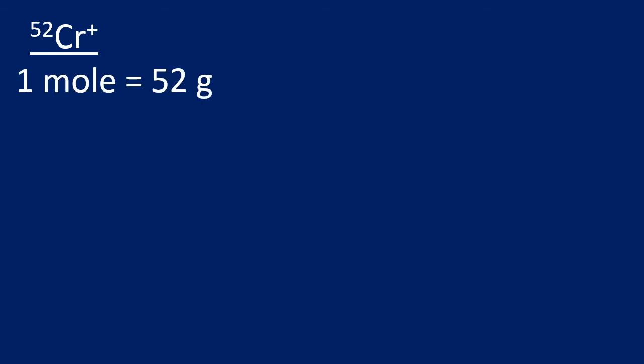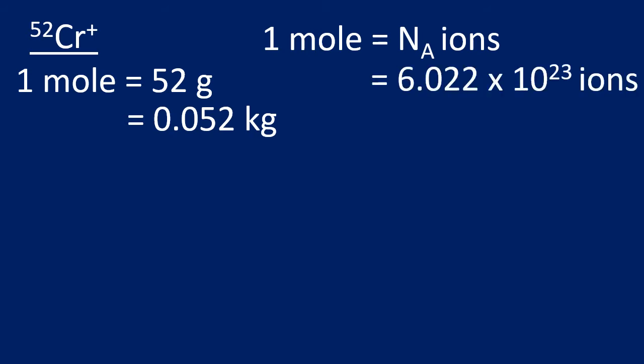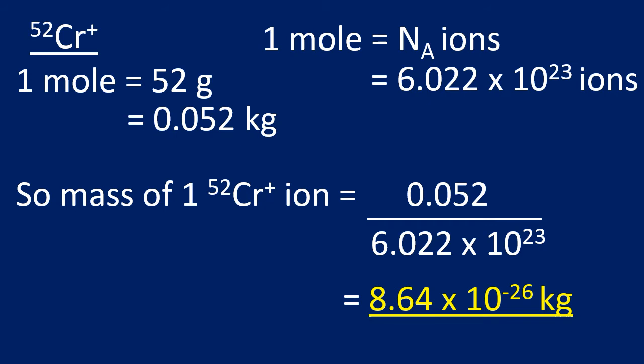Let's look at how we calculate the mass of one ion, as this is an area where students struggle. Using chromium-52 as an example: one mole of chromium-52 has a mass of 52 grams, which converts to 0.052 kilograms. One mole contains Avogadro's number of ions — 6.022 × 10²³. Dividing 0.052 kg by Avogadro's constant gives the mass of one chromium-52 ion: 8.64 × 10⁻²⁶ kg.